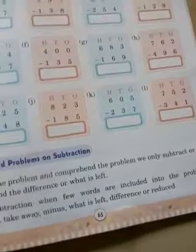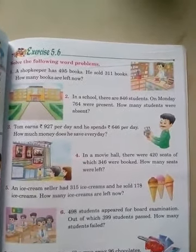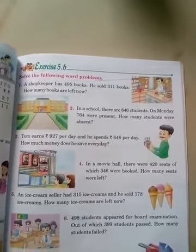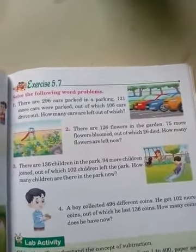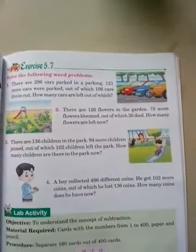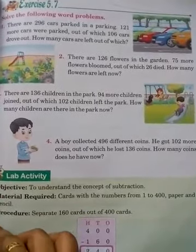This way you will do it. You have to practice all of this. After this comes word problems. In word problems, you have to do both addition and subtraction - exercise 5.7. You can do that properly. After doing that, you will move to the next chapter. Keep revising properly.